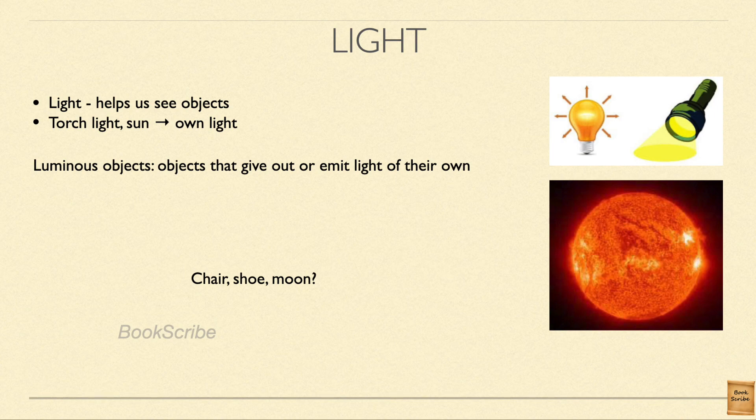A torch light, when we switch it on, gives light, and the sun gives light on its own. Objects like the sun which give out light on their own are called luminous objects.